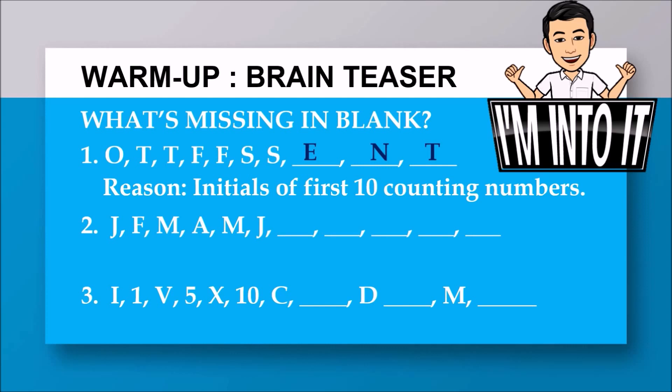For the second item, the answers are J, A, S, O, N. Look at your wall calendar. The reason is they are the initials of months in our calendar.